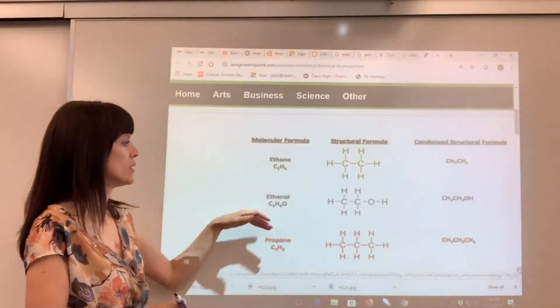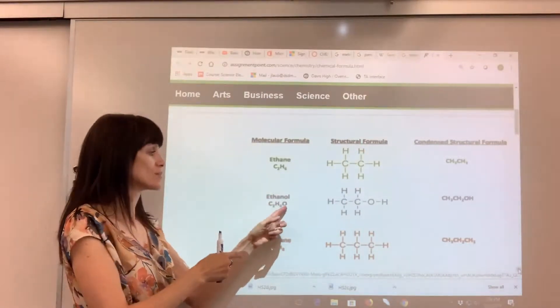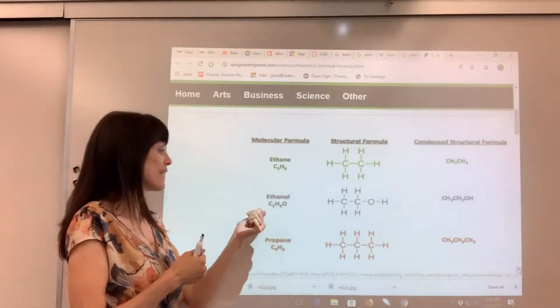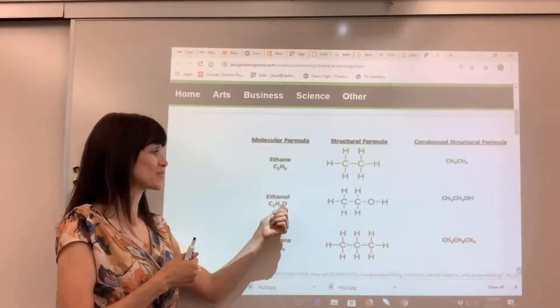Let's look at another example. So here's ethanol. Notice we have some oxygen in this. We have two carbons, six hydrogens, one oxygen.